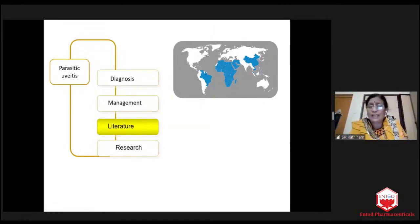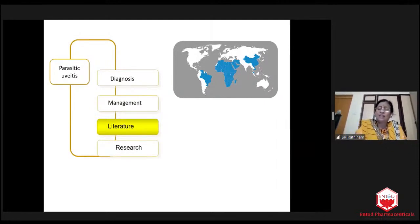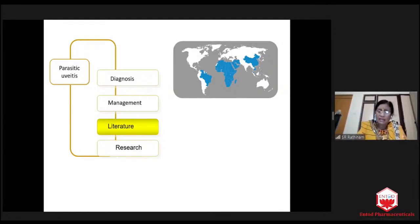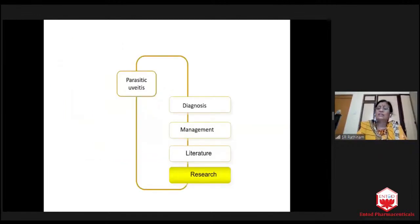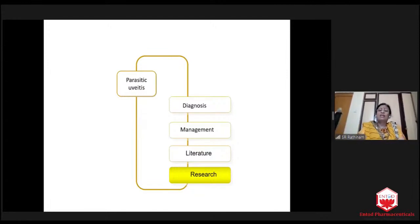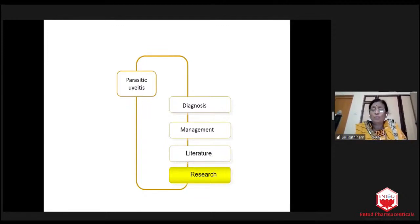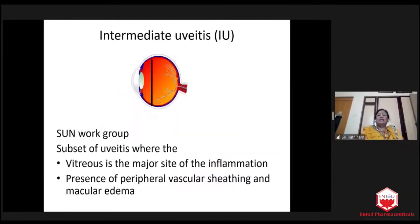Literature, we have to build. Whenever we see parasitic disease, we have to work on it and publish so that we will know the real picture. When there is no literature, there is no research in developing countries. Unless we prove, unless we publish, there won't be any research, and there won't be any good medicine. So we have a lot to learn in parasitic disease.